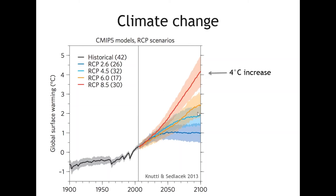If we reduce our emissions, we might be able to decrease that expected warming. This is the global surface average — in any particular region, you might expect more or less warming. For the Intermountain West, models show slightly more than this four degree warming; we might expect a five or six degree Celsius warming by the end of the century. So before we make million-dollar investments in conservation and restoration, we need to think about how the species and habitats we're working with might respond to this environmental change, and it's not just researchers who are saying this.